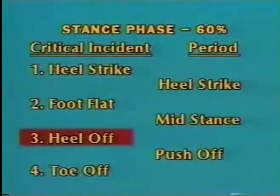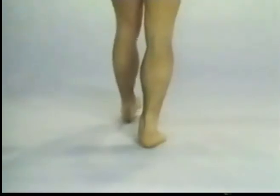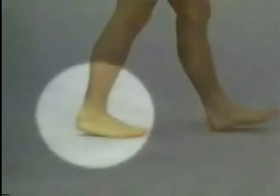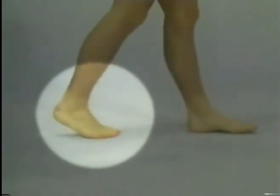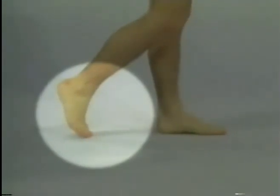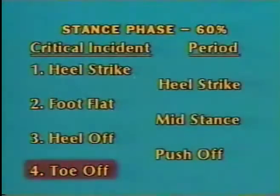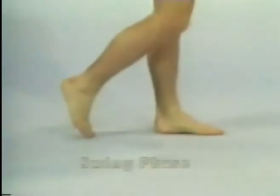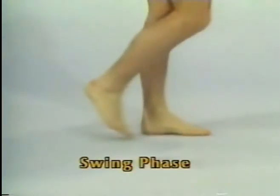Heel off. As the body weight passes further forward over the supporting foot, the gastrocnemius soleus complex contracts causing plantar flexion of the foot and ankle to occur, giving rise to the heel off position in preparation for the final critical incident of the stance phase known as toe off. As the forefoot leaves the ground, the extremity now enters the swing phase of gait.